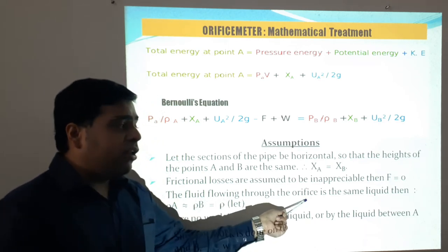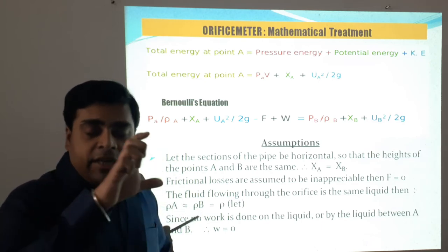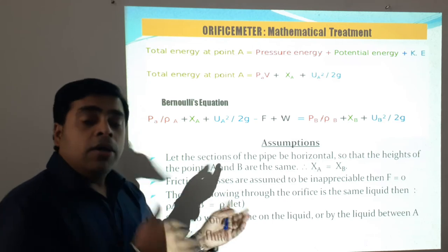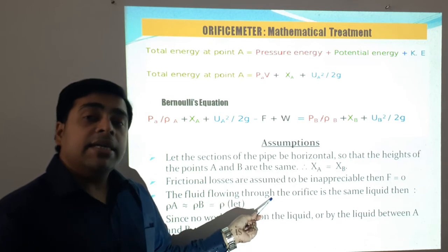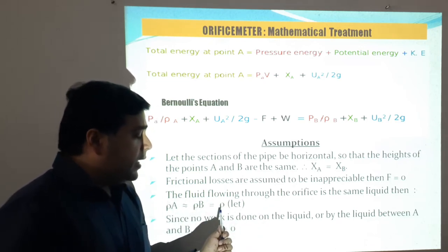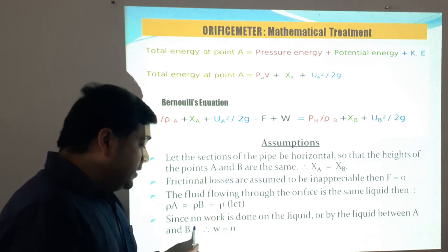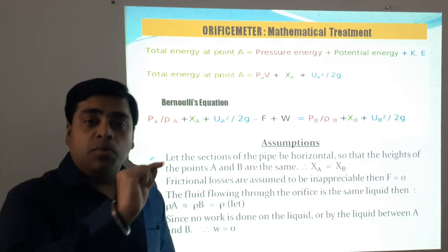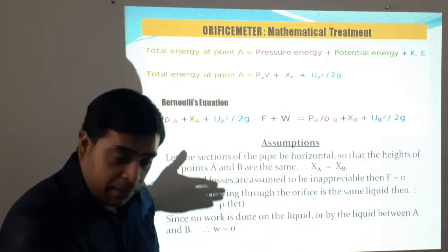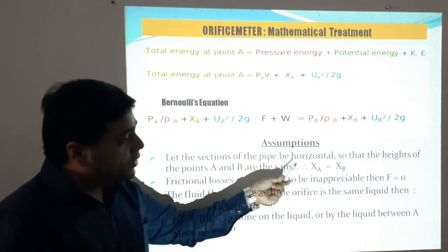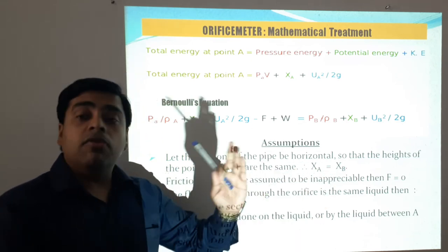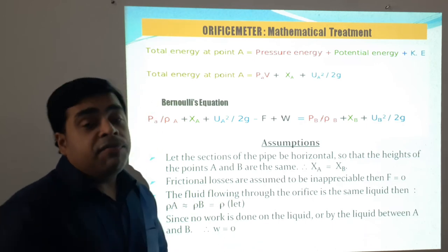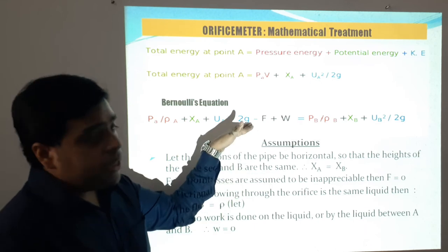The third assumption is that since it is the same liquid flowing through the orifice, the density does not change, so ρA = ρB = ρ. The fourth assumption is that since no work is done on or by the liquid between points A and B — the liquid simply moves through the pipe and the orifice plate — W is also considered as zero. Substituting all assumptions: XA = XB, F = 0, ρA = ρB = ρ, and W = 0 into Bernoulli's equation.